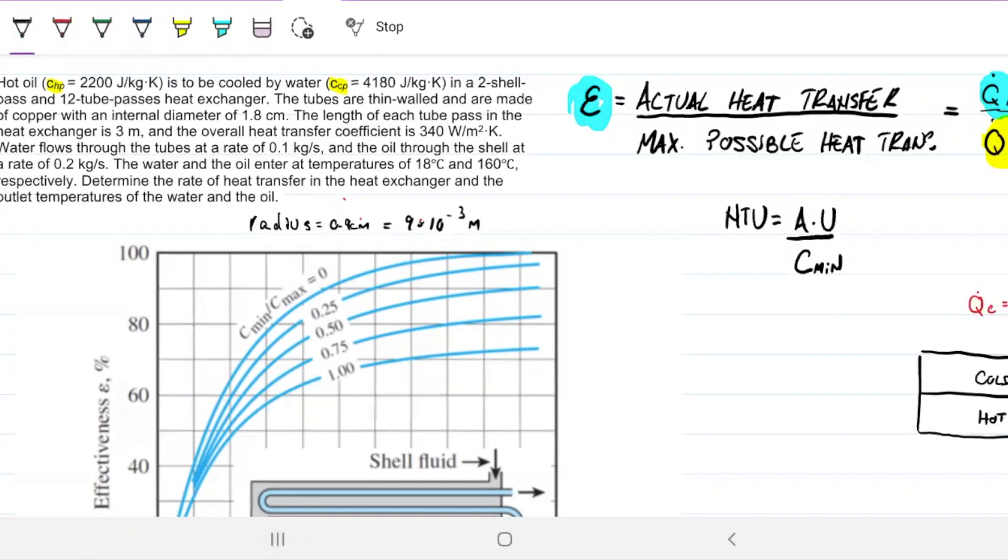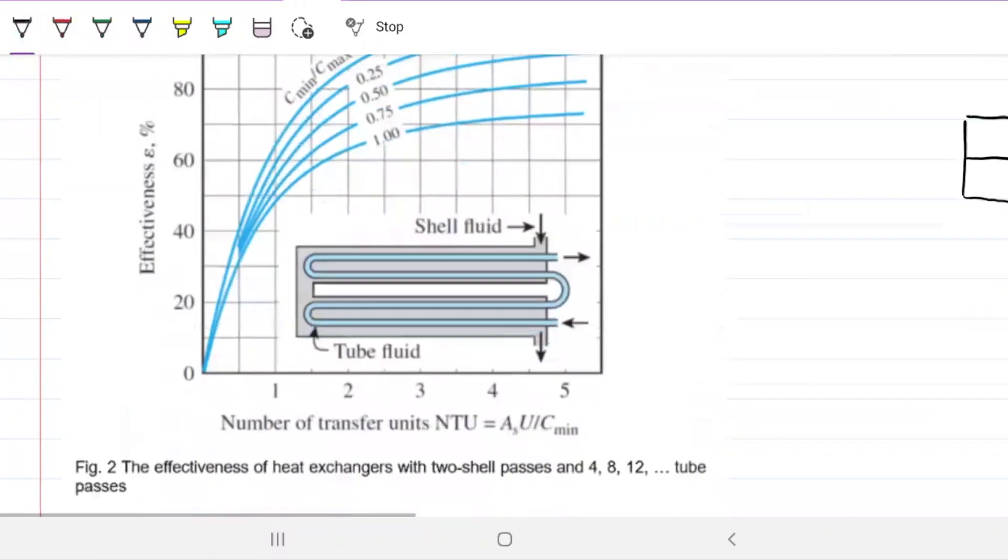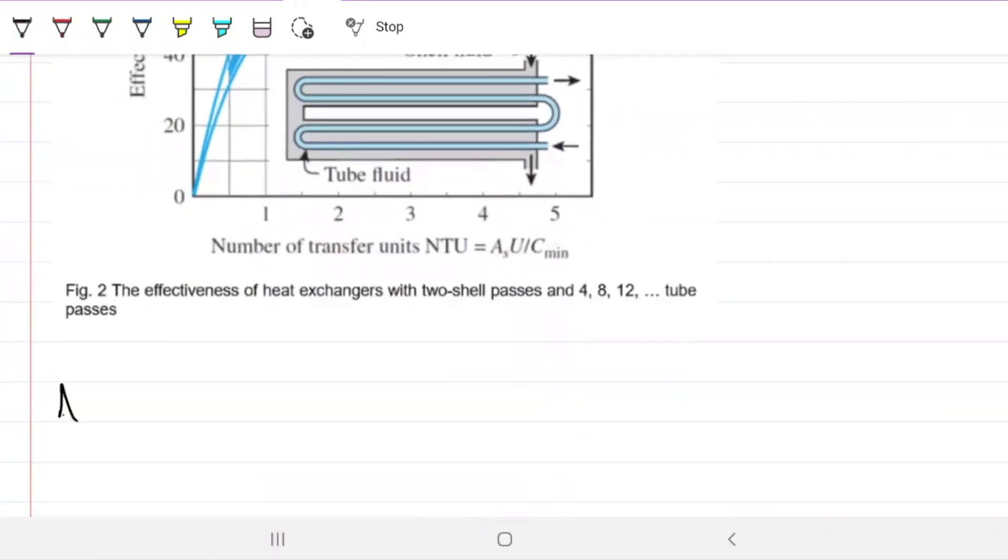The length of each tube, mind you, is 3 meters. So if we want to find the surface area, and we do, what we need to do is surface area of one tube will be 2πR times L, but we have 12 of those, so we have to multiply this by 12.